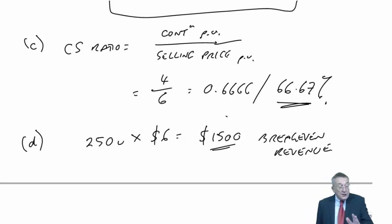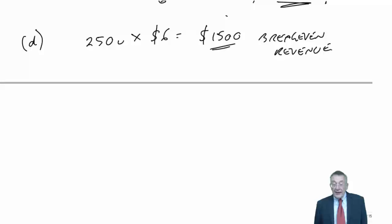We can write the answer virtually straight down. We know that break-even units was 250, so if we sell 250 units at a selling price of $6, the revenue would be $1,500. That is break-even revenue.